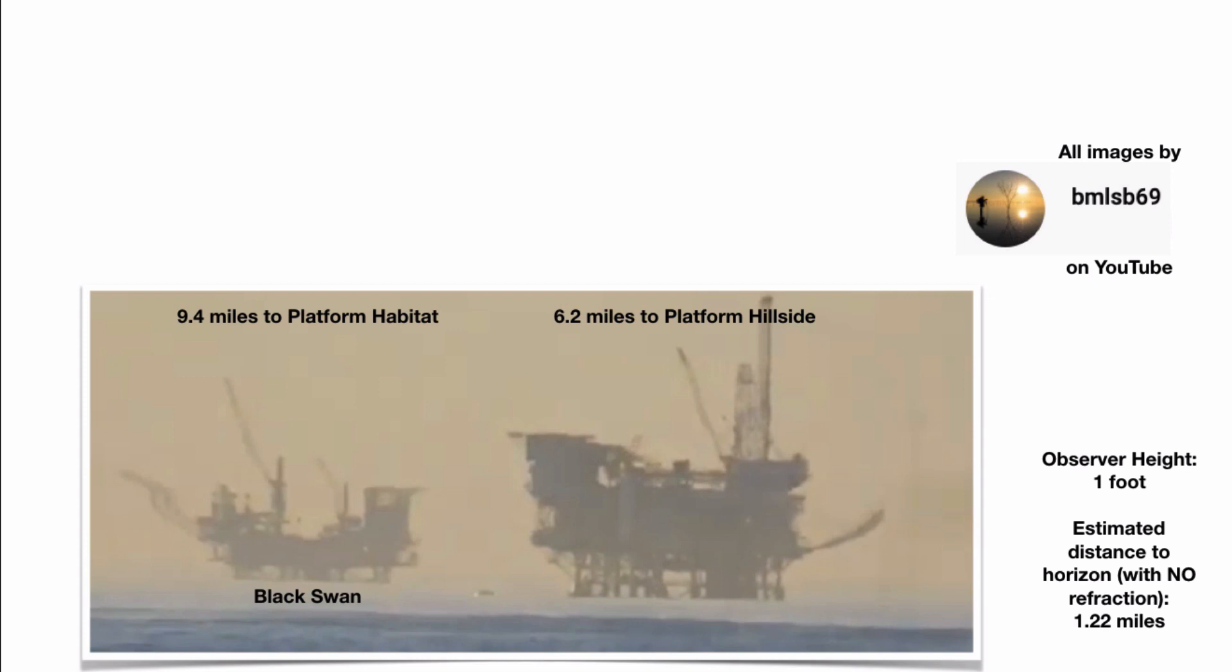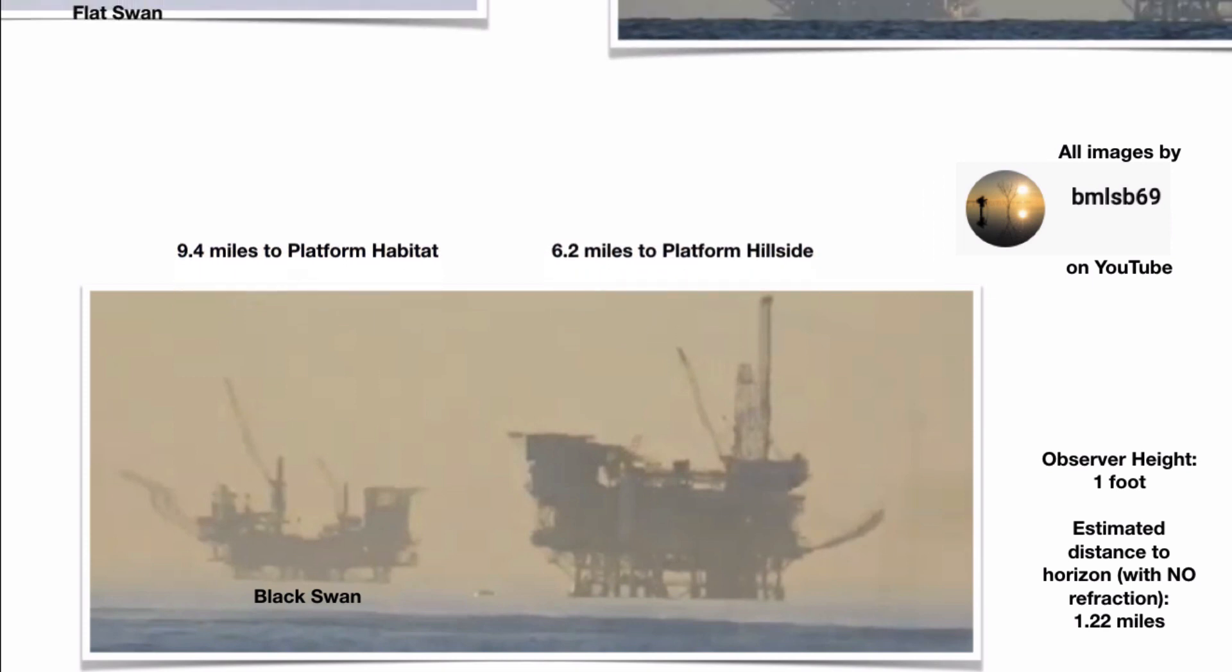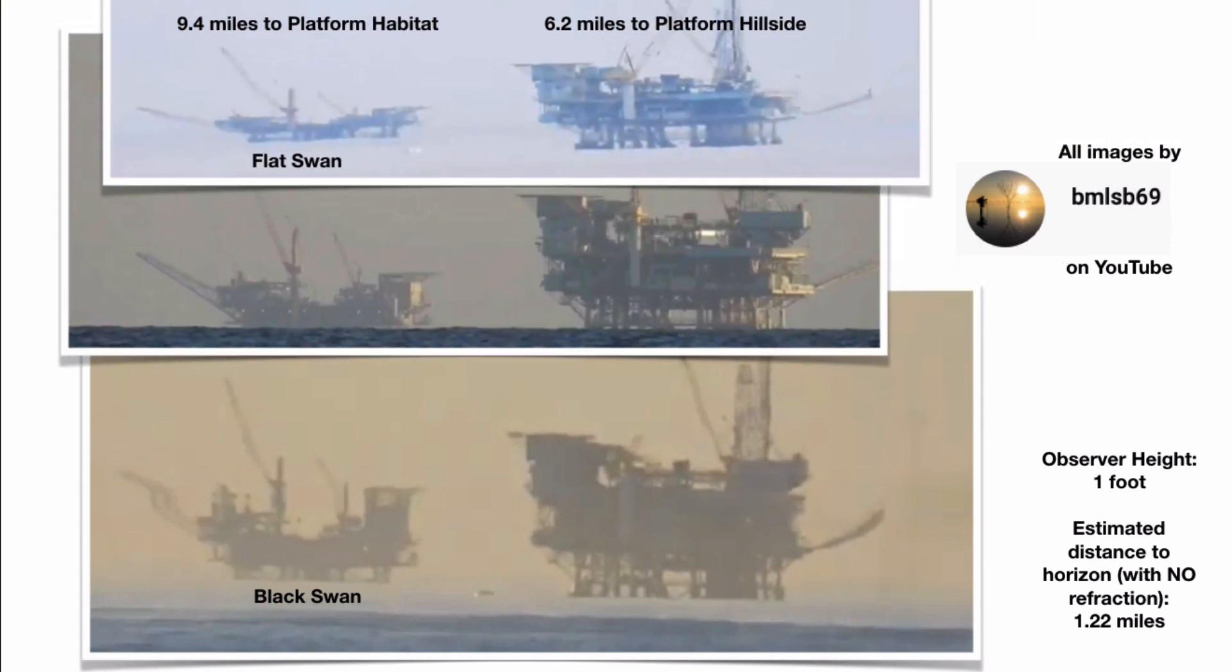So then the question is, being that we've addressed the unstated assumption, is there refraction in this image? So fortunately, the YouTube photographer BMLSB69 has taken many more photos and images and video from this exact same location, one foot above the water, using the same camera, same setup, just on different days. So the top image, which we can call flat swan, platform habitat is looking pretty flat. The middle image, where there doesn't really seem to be any distortion, and then the bottom image, which is the black swan.